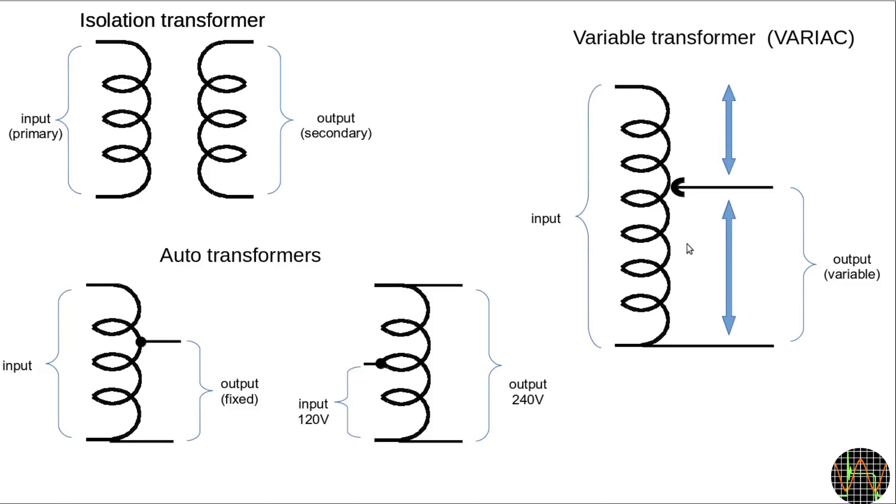A VARIAC is expensive to make, so it is not a transformer to adjust once and never touch again. Instead, you use it as a test device to provide a selectable AC voltage for many purposes. Just don't forget, it is an autotransformer, so its output even at low voltages is always directly connected to mains.